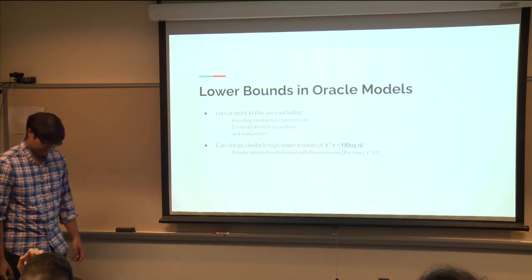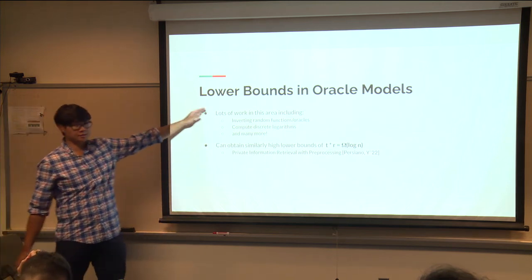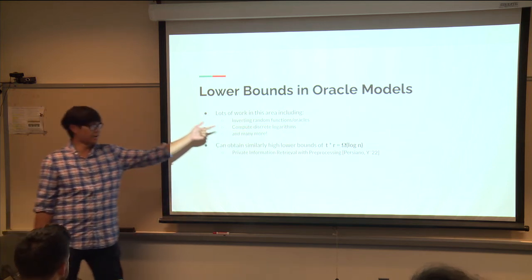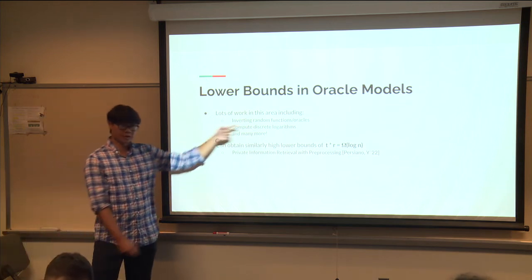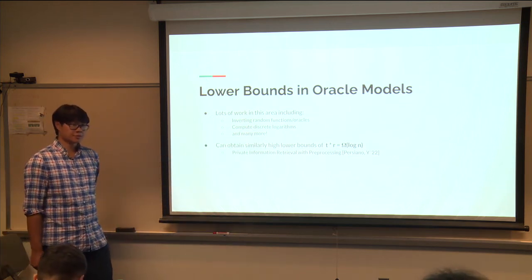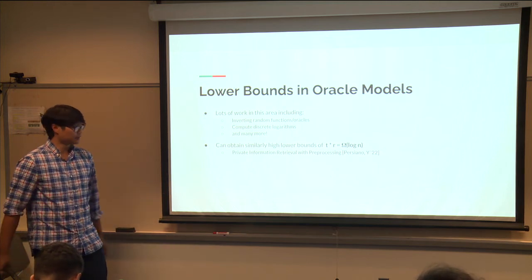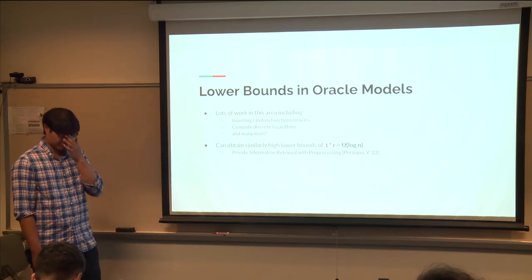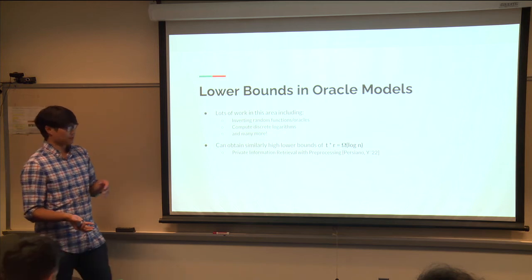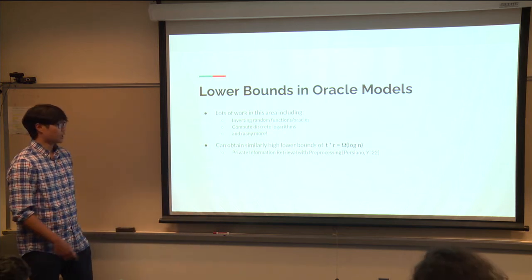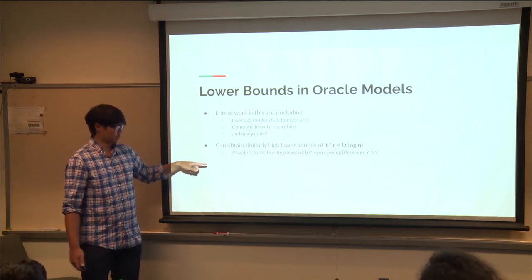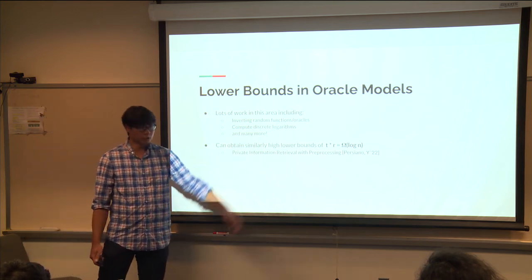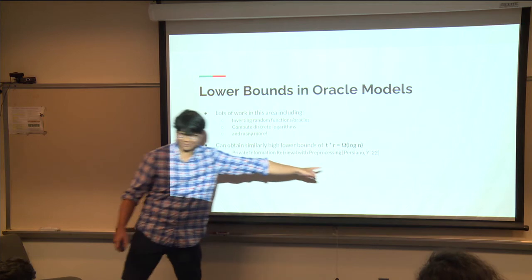There's a connection between several works over two or three decades studying problems like inverting random hash functions, random permutations, random oracles, computing discrete logarithms, encryption and decryption. Techniques from systematic succinct data structures could improve lower bounds here or vice versa. I worked on a result for private information retrieval preprocessing in this oracle model that achieves similarly strong results.